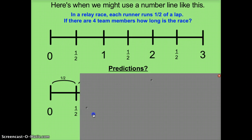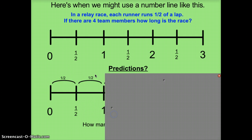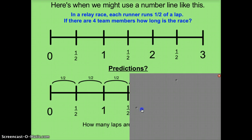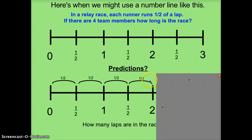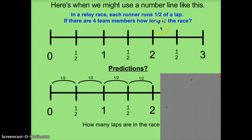We're going to see one-half once — that's the first person running their part of the relay. Here's the second person running, and between those two people they've run one whole lap so far. After the third person finishes, they've run one-and-a-half laps. After the fourth member finishes their half, altogether this relay team has run two whole laps. The race is two laps.